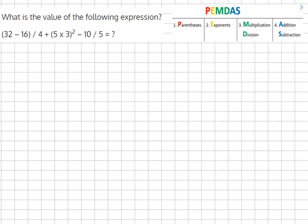What is the value of the following expression? 32 minus 16 over 4 plus 5 times 3 squared minus 10 over 5.